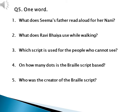Question number five, one word answers. Number one: what does Seema's father read aloud for her nani? Answer is the newspaper. Number two: what does Ravi bhaiya use while walking? Answer is white stick, because he is blind. Number three: which script is used for people who cannot see? Answer is braille script.